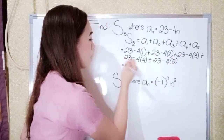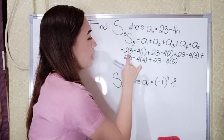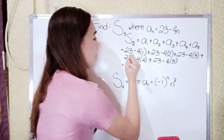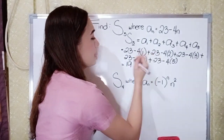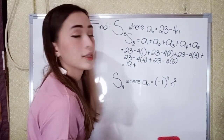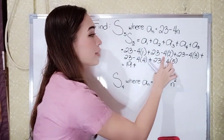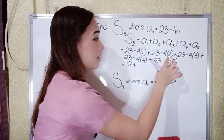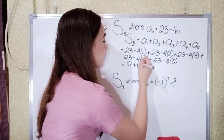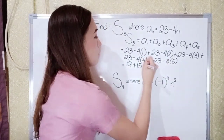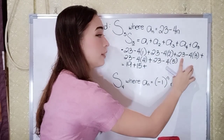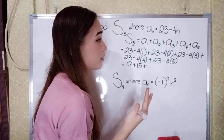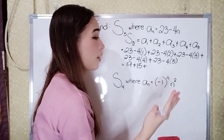Next is to perform the operation. So 23 minus 4 times 1: 4 times 1 is 4, so 23 minus 4 is 19. Plus, next: 23 minus 4 times 2, so 4 times 2 is 8, so 23 minus 8 is 15. Next, add again: 23 minus 4 times 3, so 4 times 3 is 12, so 23 minus 12 is 11.